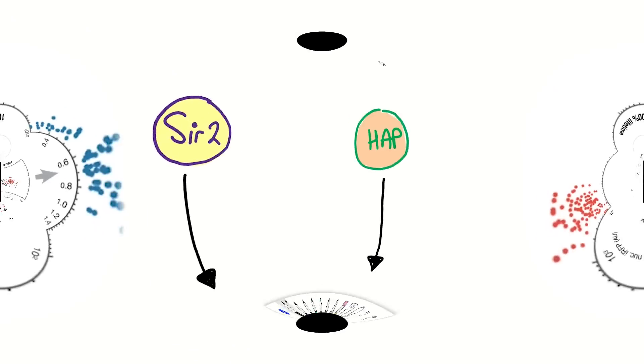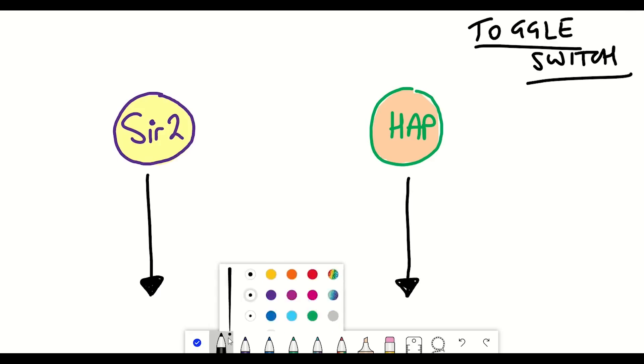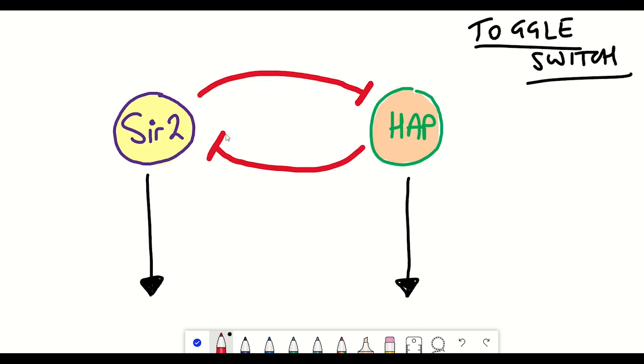They wondered if they could do something about this to cause it to oscillate between the two fates instead of committing to one. To understand this we first have to look at the gene circuit thought to underpin this decision making, and we can see it's a toggle switch.